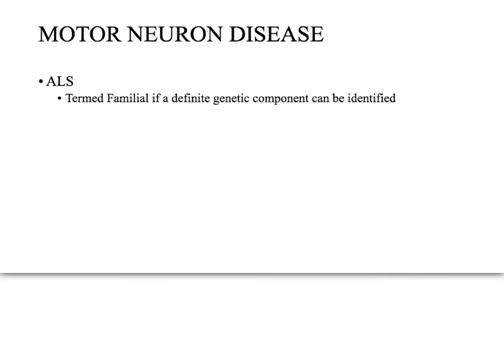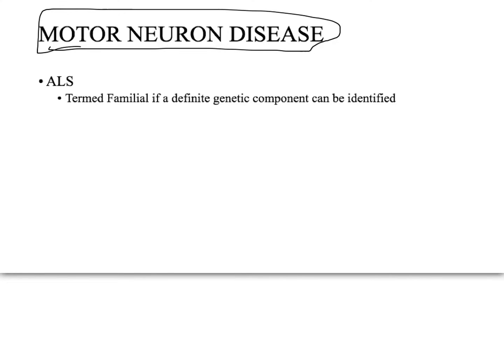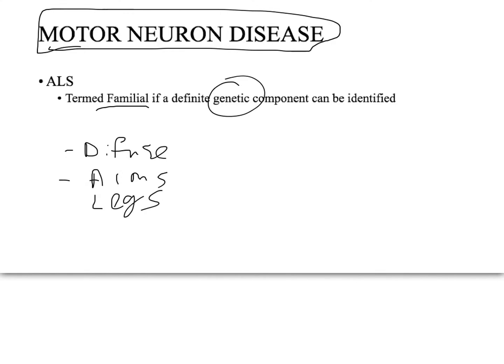ALS is classified as a motor neuron disease. If it has a genetic component, it is termed familial ALS; if not, it is non-familial ALS. It is called ALS when there is diffuse motor weakness — usually asymmetrical but not isolated to arms or legs. Importantly, it includes only motor neurons; if anything else is involved, it is not considered pure ALS.